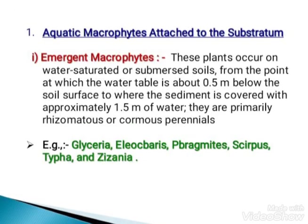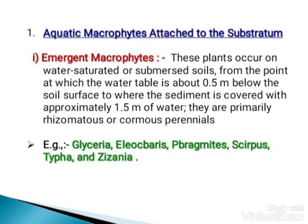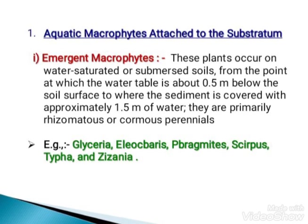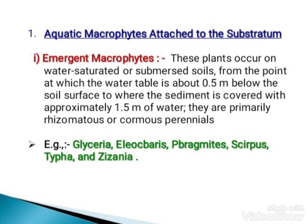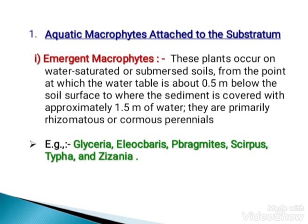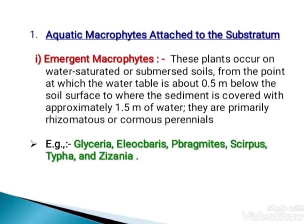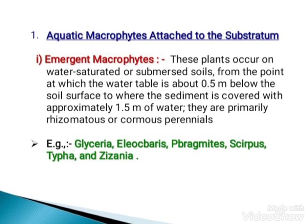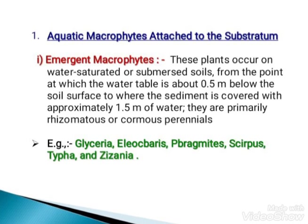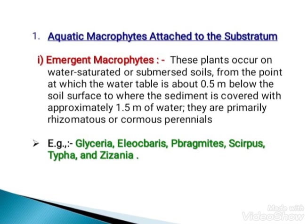Now, coming to Type 1: aquatic macrophytes attached to the substratum. Emergent macrophytes: these plants occur on water-saturated or submerged soils from the point at which the water table is about 0.5 m below the soil surface to where the sediment is covered with approximately 1.5 meters of water. They are primarily rhizomatous or clonal perennials. Some examples are Glyceria, Alisma, Phragmites, Scirpus, Typha, and Zizania.